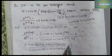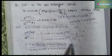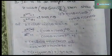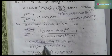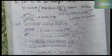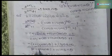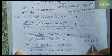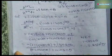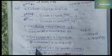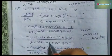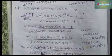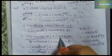Take minus common in the numerator: −(1 − cos 2nθ − i sin 2nθ). Using the identities 1 − cos 2nθ = 2sin²(nθ) and 1 + cos 2nθ = 2cos²(nθ), and sin 2nθ = 2sin(nθ)cos(nθ) from trigonometry, substitute these into the numerator and denominator.